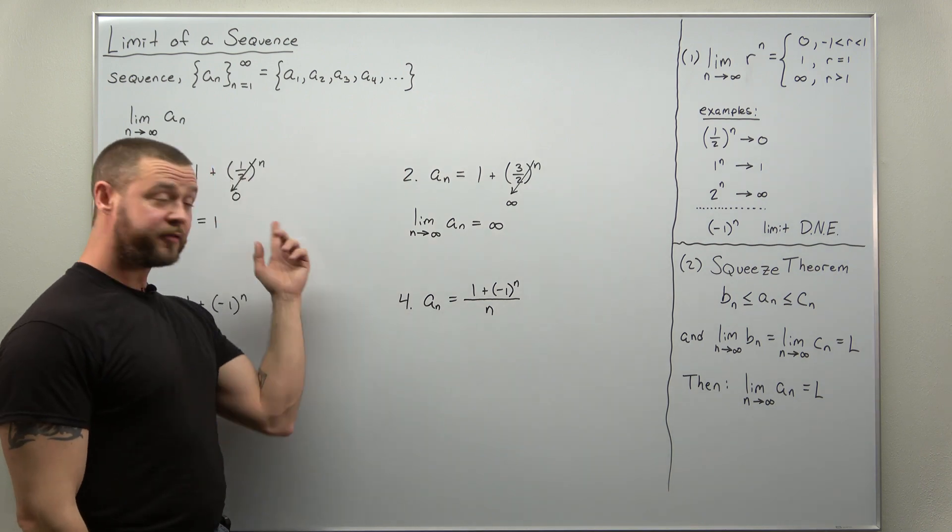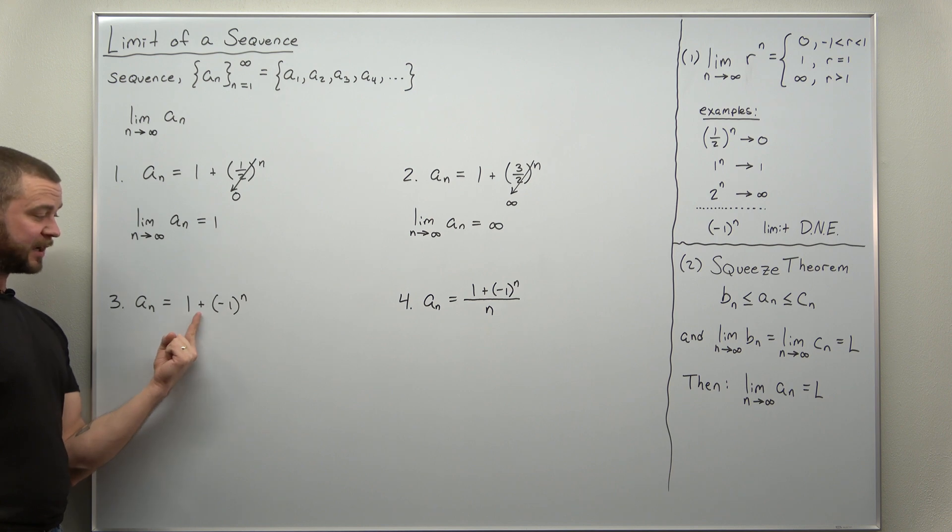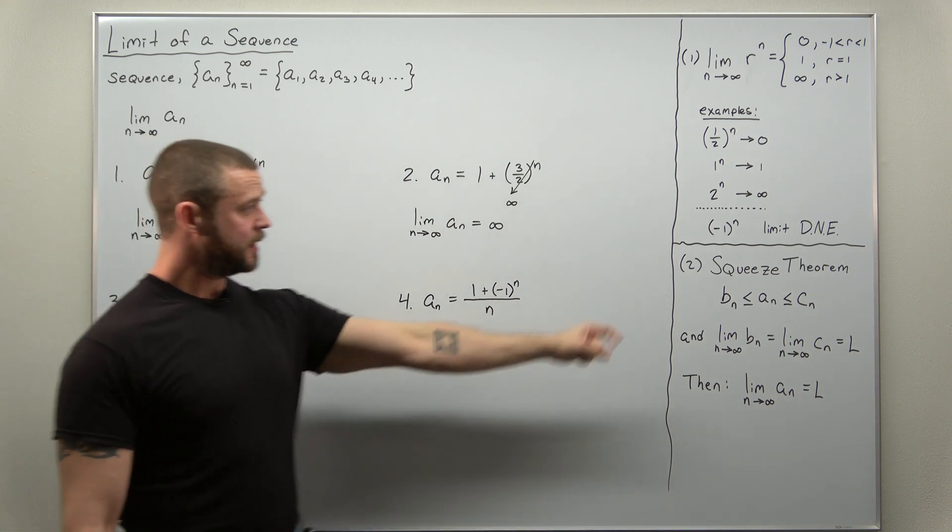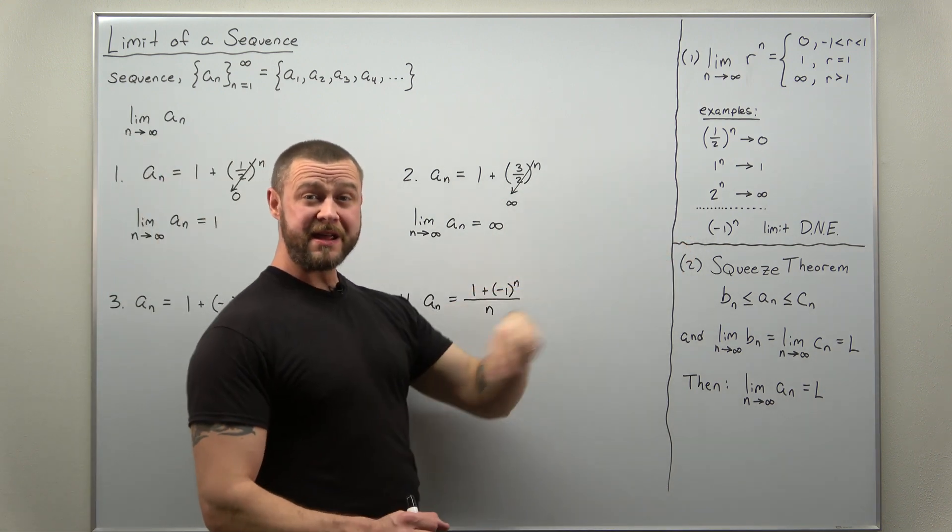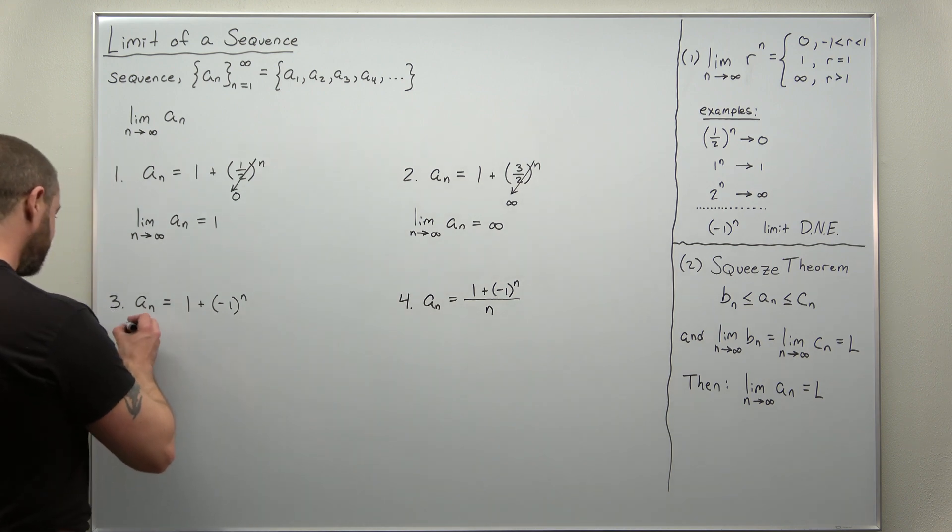All right, that takes care of the first two. Let's go to the third, where our term a sub n in the sequence is given as one plus negative one to the nth power. Now this is close to this, but we added one to that. So let's just write out what some of these terms look like for that sequence.